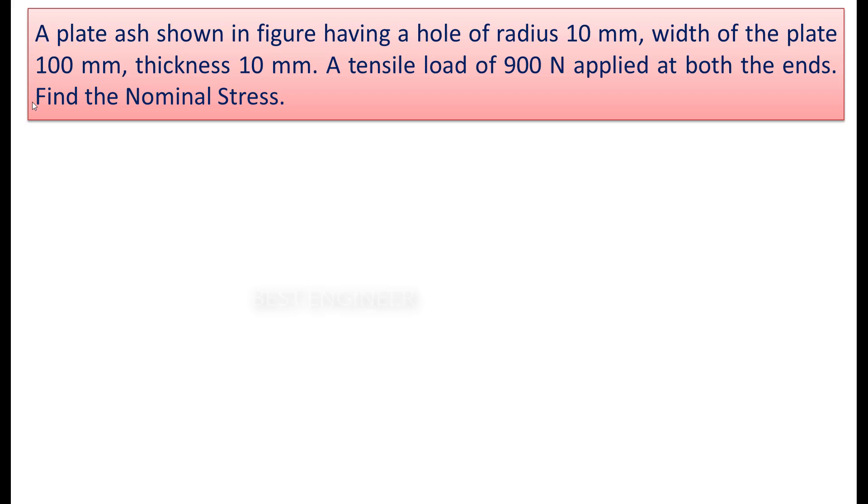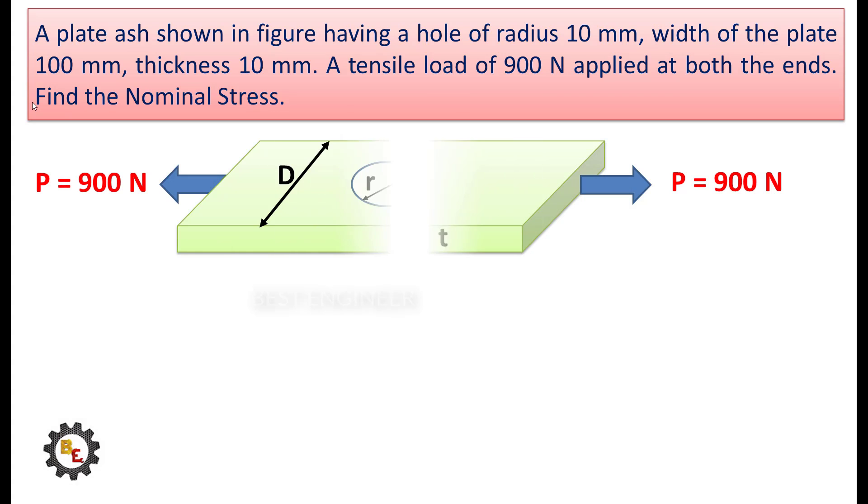Let us solve a problem. The question is: a plate as shown in the figure having a hole of radius 10 mm, width of the plate 100 mm, thickness 10 mm. A tensile load of 900 N was applied at both ends. Find the nominal stress. See this picture, a plate having a hole and the load is applied at both ends.